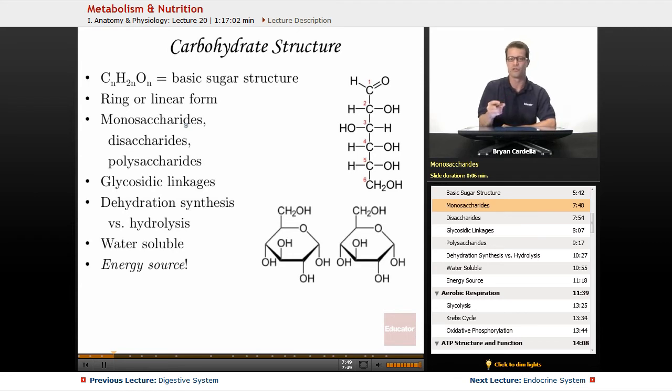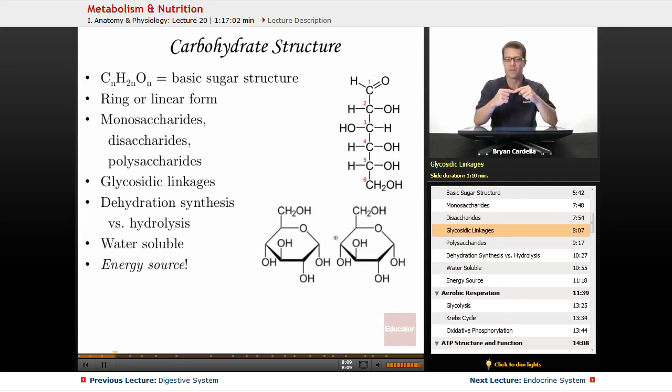So monosaccharides are single sugars, glucose is the classic one. Disaccharides is a double sugar. So we could connect these two glucoses to make something called maltose. Maltose is a disaccharide. That's where you get malt sugar from. And the way it happens is you make a glycosidic linkage, which is just a fancy term for saying a bond between two monosaccharides.